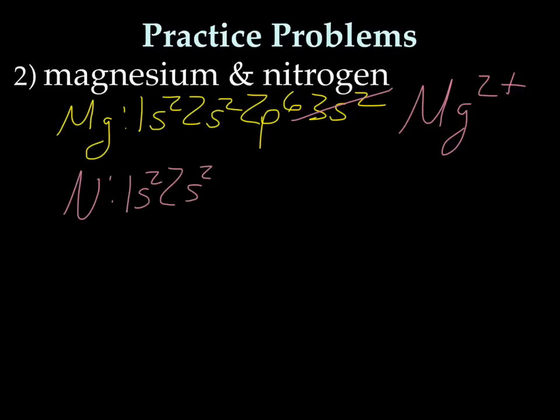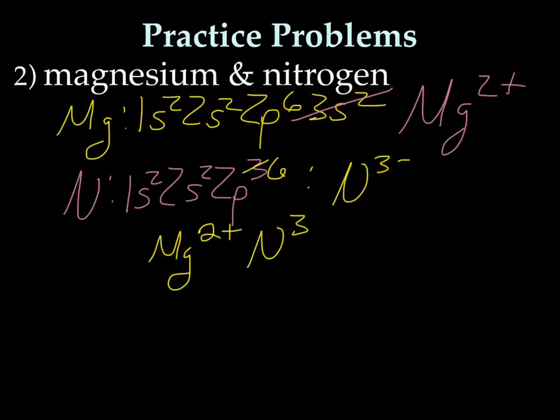Nitrogen is 1s2, 2s2, 2p3. And because he's a non-metal, he's going to be gaining electrons to become like an ion. And he gains 3 electrons, so he's going to be N3-. We'll put these guys together side by side with the positive first, with the cation first. We have Mg2+, N3-.